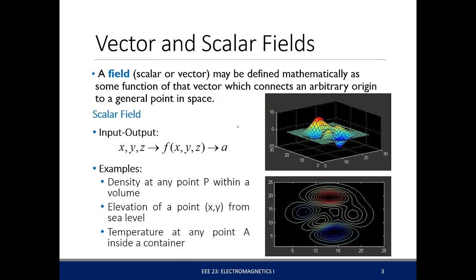Fields may be defined mathematically as a function of a vector which connects an arbitrary origin to a general point in space. Basically, it's just a function — a function of a position vector. A scalar field has a scalar output. An example of a scalar field is the density at any point P within a volume, or the distribution of mass within your body. The distribution of gravitational pull, however, is a vector field.